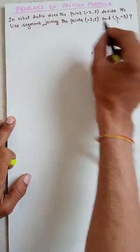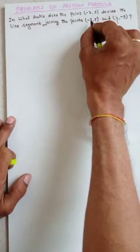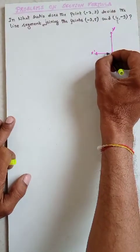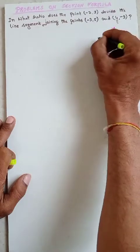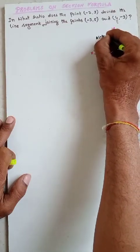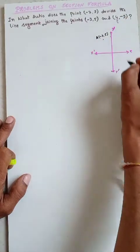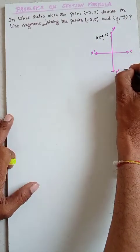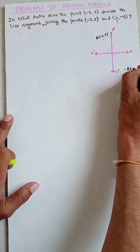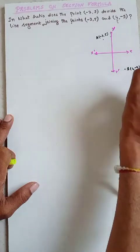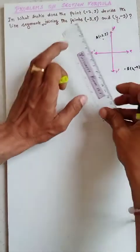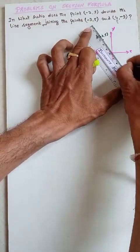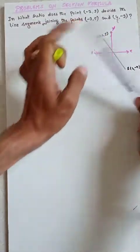These two points are the endpoints of the line segment, so let us label them. Let A be (−3, 5) — that is x1, y1 — and B be (4, −9), which is in the fourth quadrant — that is x2, y2. Let me join these two points to form the line segment.